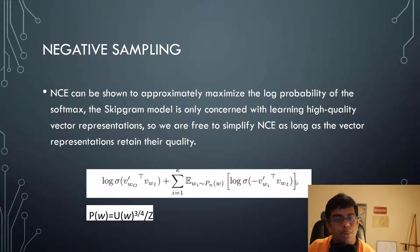So what refinement we did basically over NCE? The main difference between NCE and negative sampling is that NCE needs both sample and the numerical probabilities of noise distribution, but the negative sampling just uses the samples. So that's the modification we basically made.